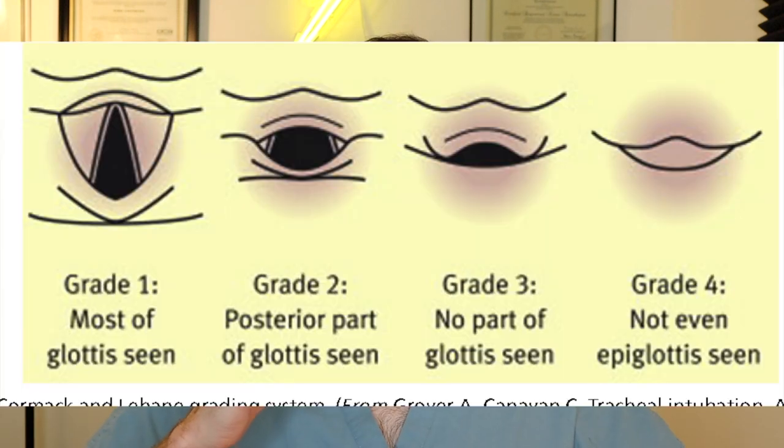The Cormack-Lehane score grades your view of the glottic opening before you place the endotracheal tube. A grade one means a clear, confident, wide-open view — you're going in and intubating. A grade three view raises concern: either you're not instrumenting the airway well, or this is an unanticipated difficult airway. That triggers thinking about secondary equipment — bougie, GlideScope, McGrath — or switching blade type.